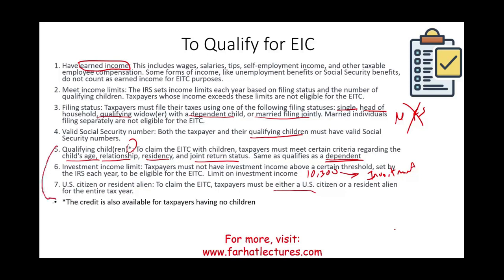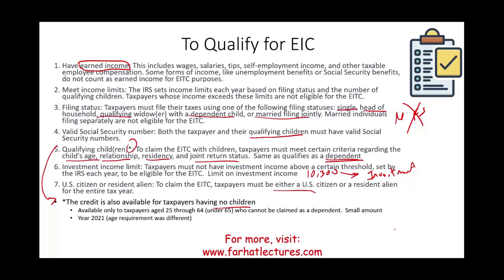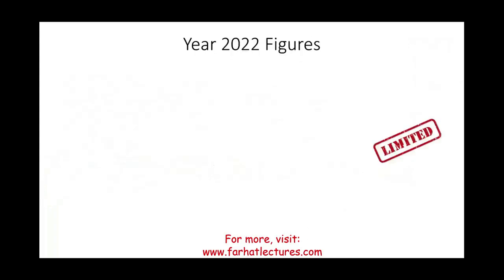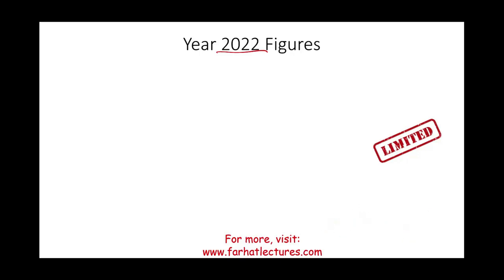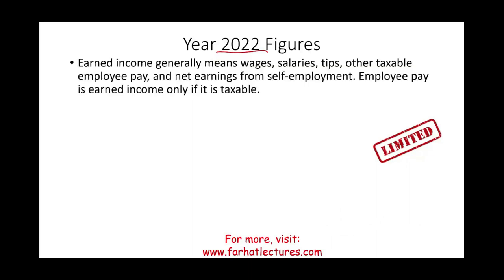The EIC is also available for people with no children. For individuals with no children, the taxpayer must be between ages 25 and 64, and cannot be claimed as a dependent — though the credit amount is small. Note: the age was temporarily lowered in 2021 but pushed back to 25 for single individuals with no children. Earned income is defined as wages, salaries, tips, other taxable income, and net earnings from self-employment.